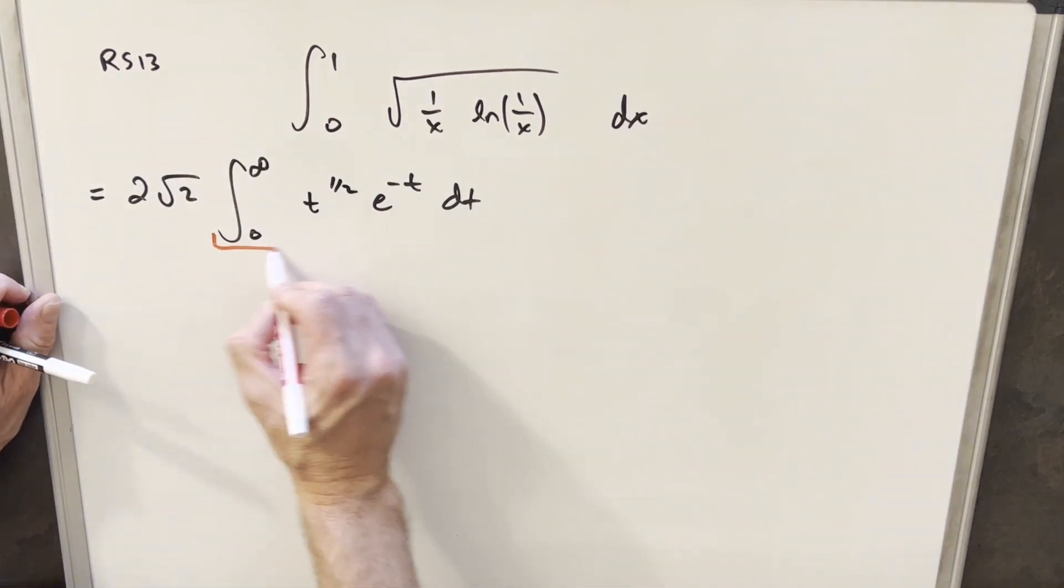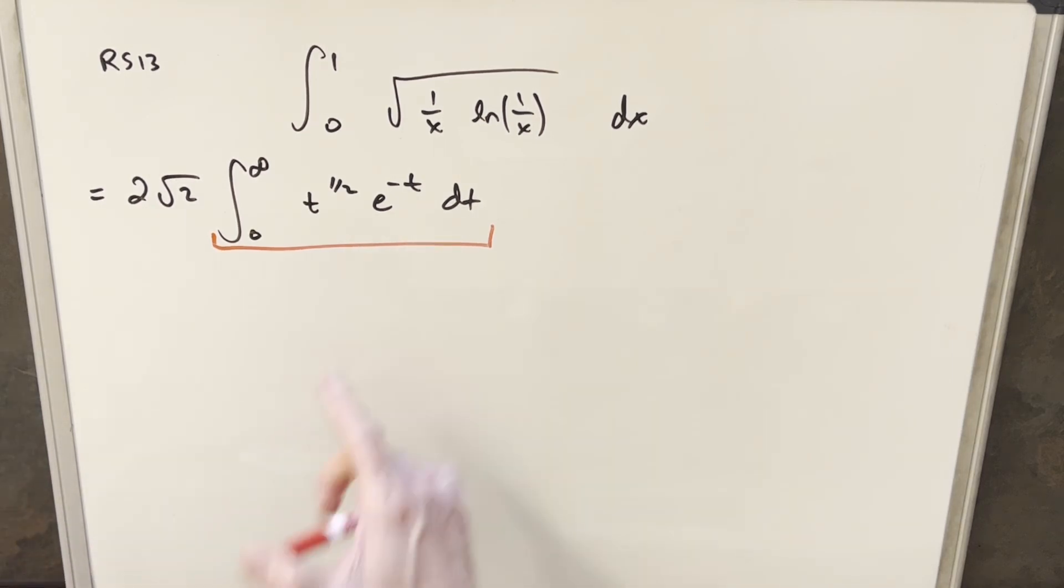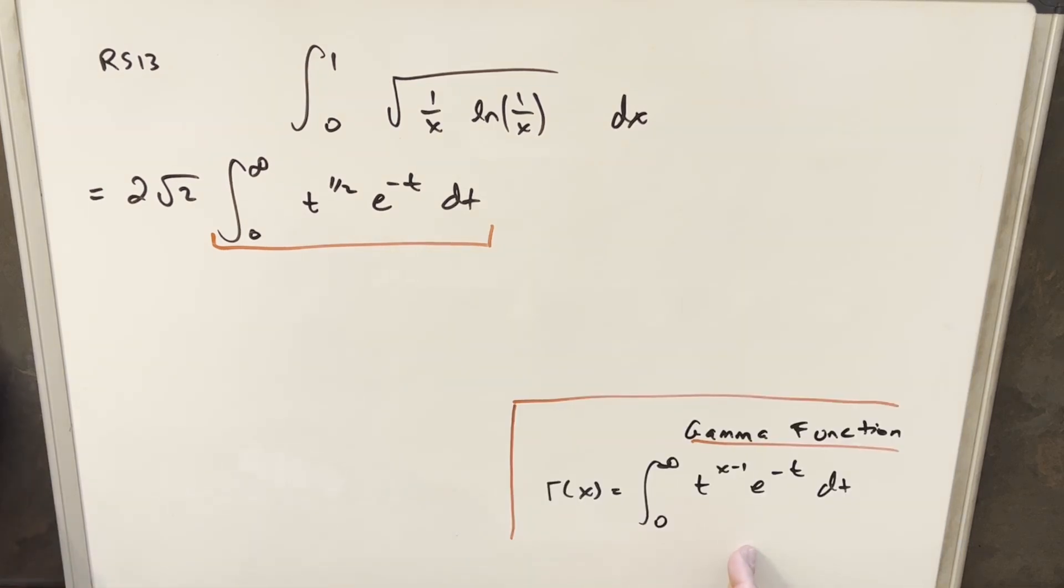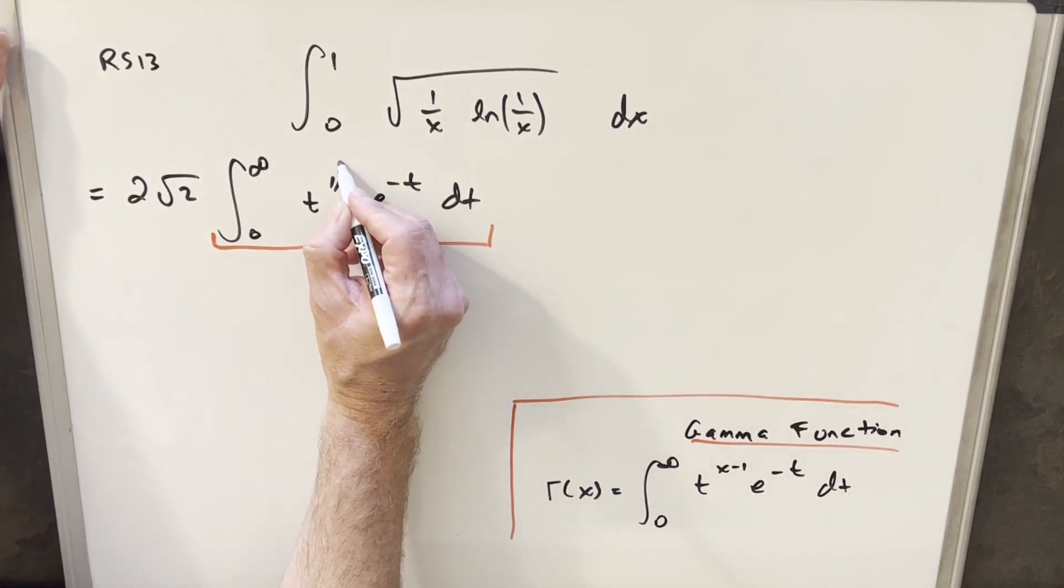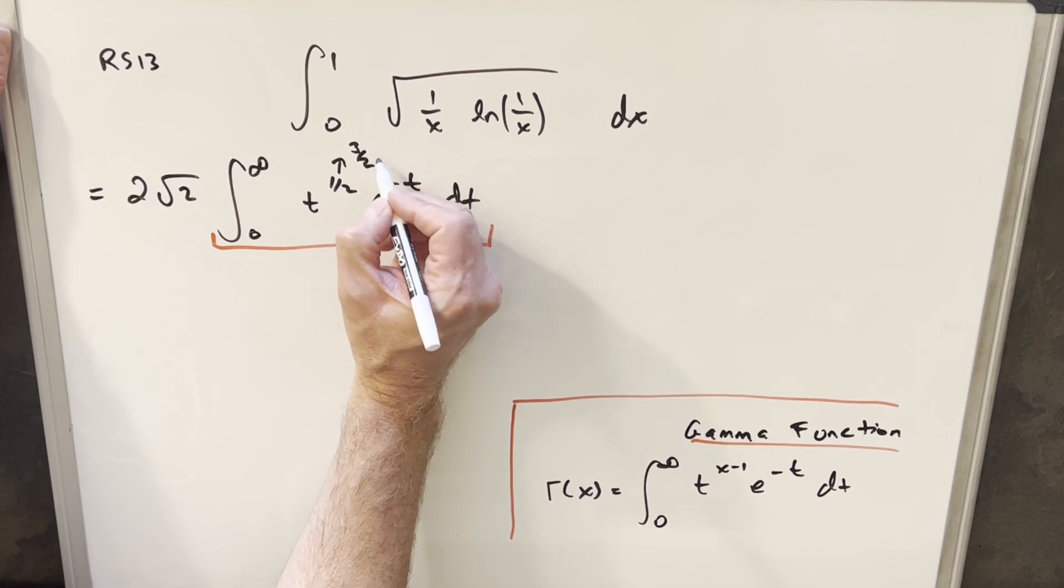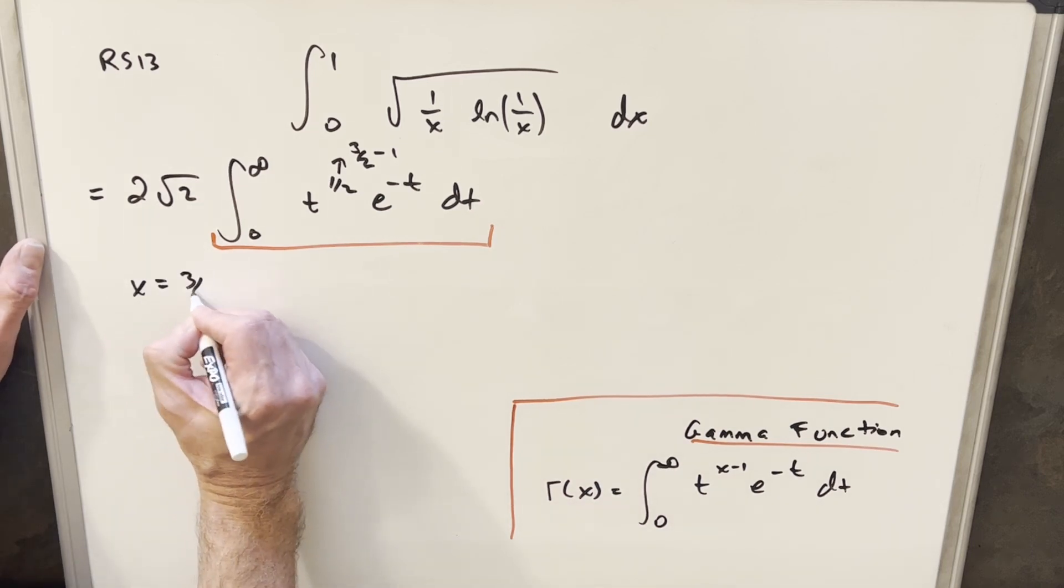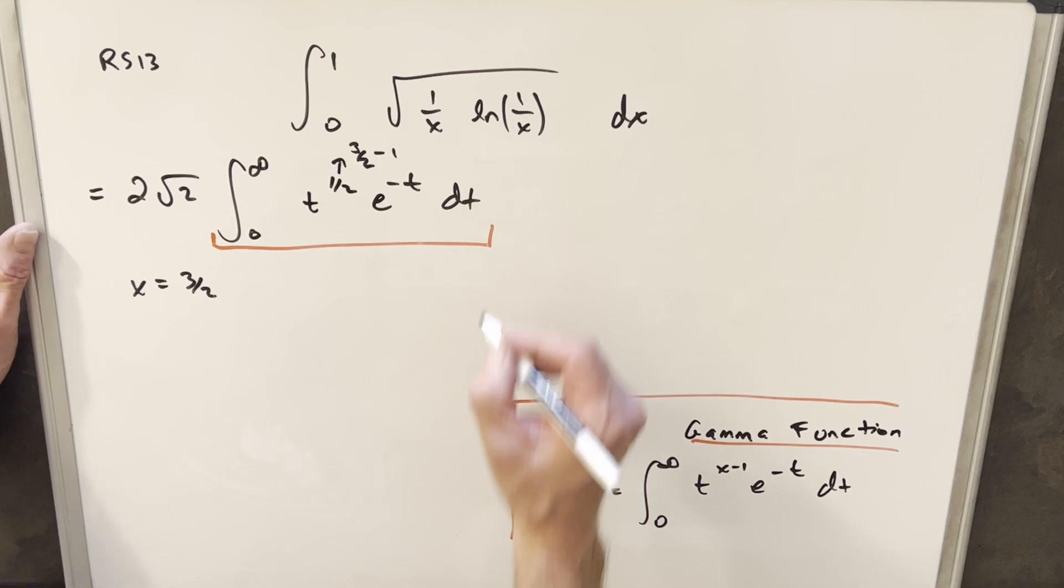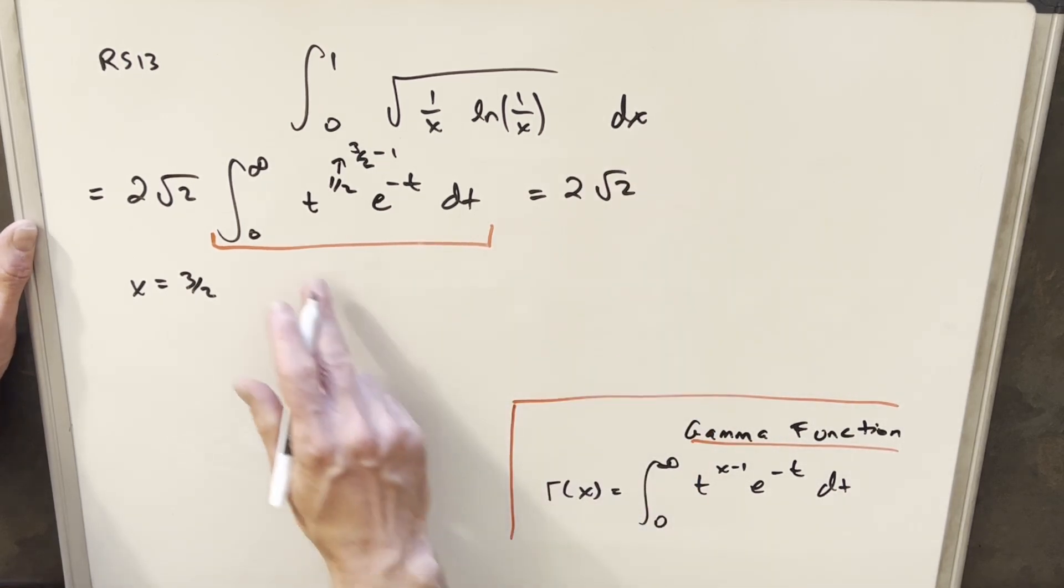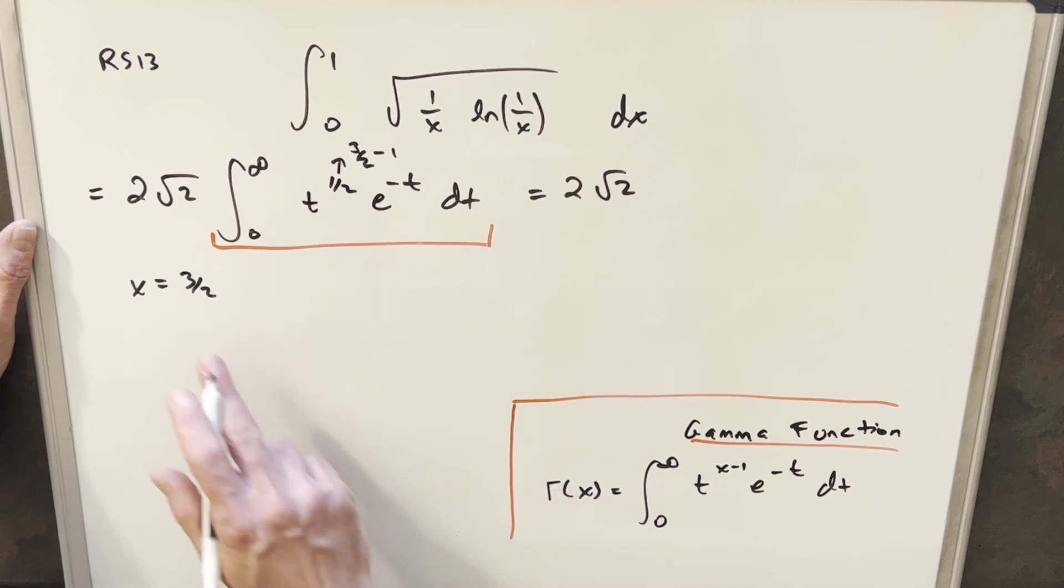Now at this point, we've got a very different looking integral here. We could try integration by parts, but rather than that, I like to notice the similarity here to the gamma function. We have this formula for the gamma function over here on the right. It's pretty much perfect. We have our e to the minus t, same bounds. Our exponent here is a half, and we have x minus 1. To get that into the same form, I'll write 1 half as 3 halves minus 1. So our x value here is 3 halves. Using this formula, we have our 2 square root of 2 up front, but the whole integral is the same thing as gamma of 3 halves.